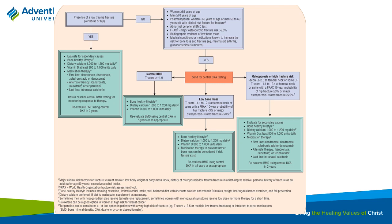Keep in mind the terminology differences: calcitonin is the PTH antagonist that opposes PTH effects—similar to how growth hormone and somatostatin oppose each other. Calcifediol is the first, partially activated form of vitamin D. Calcitriol is the fully active form—1,25-dihydroxyvitamin D. For patients with kidney or liver disease who need vitamin D, calcitriol is what you want to prescribe.